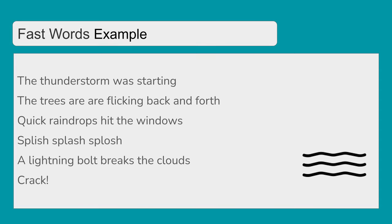Now that we have a bit of an idea of some of the well-chosen words that we could use for a fast-paced poem or a slow-paced poem, here are two examples that I've written for you. The thunderstorm was starting. The trees are flicking back and forth. Quick raindrops hit the windows. Splish, splash, splash. A lightning bolt breaks the clouds. Crack! As you can see from that example, I've used some sound words or onomatopoeia, and I've used those quick, short, sharp words.